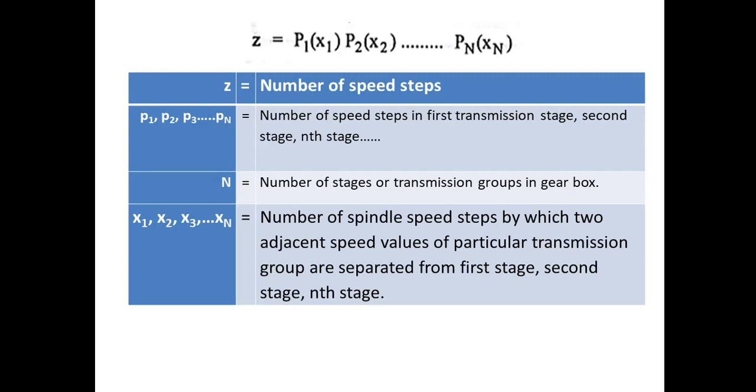Now let us see how X1, X2, X3, Xn values are found out. X1 is always 1, X2 is P1, X3 is P1 into P2, X4 is P1 into P2 into P3, Xn is P1 into P2 into Pn minus 1.